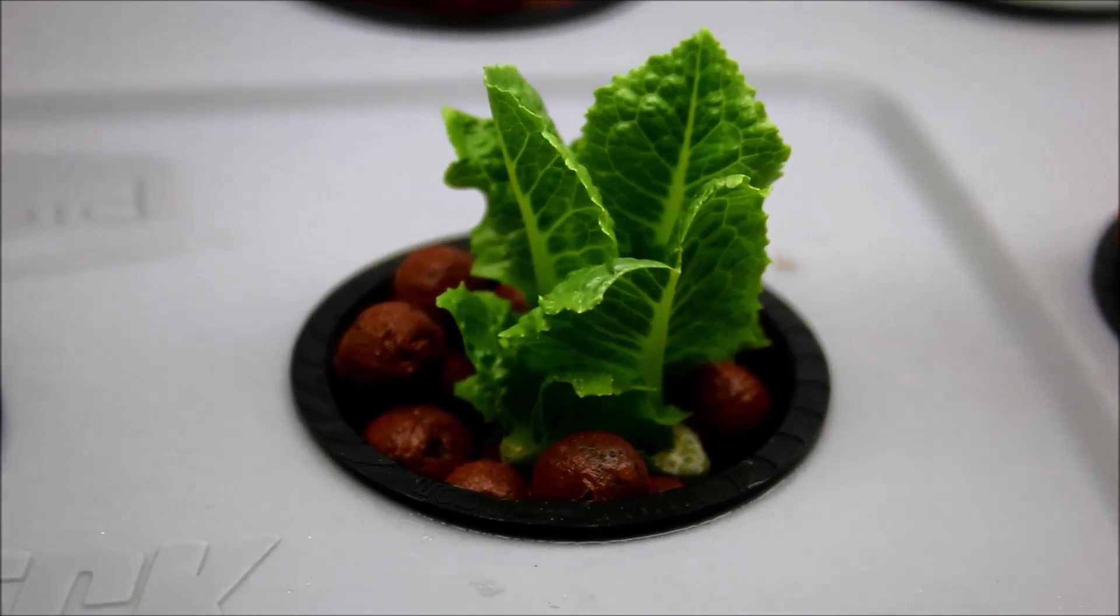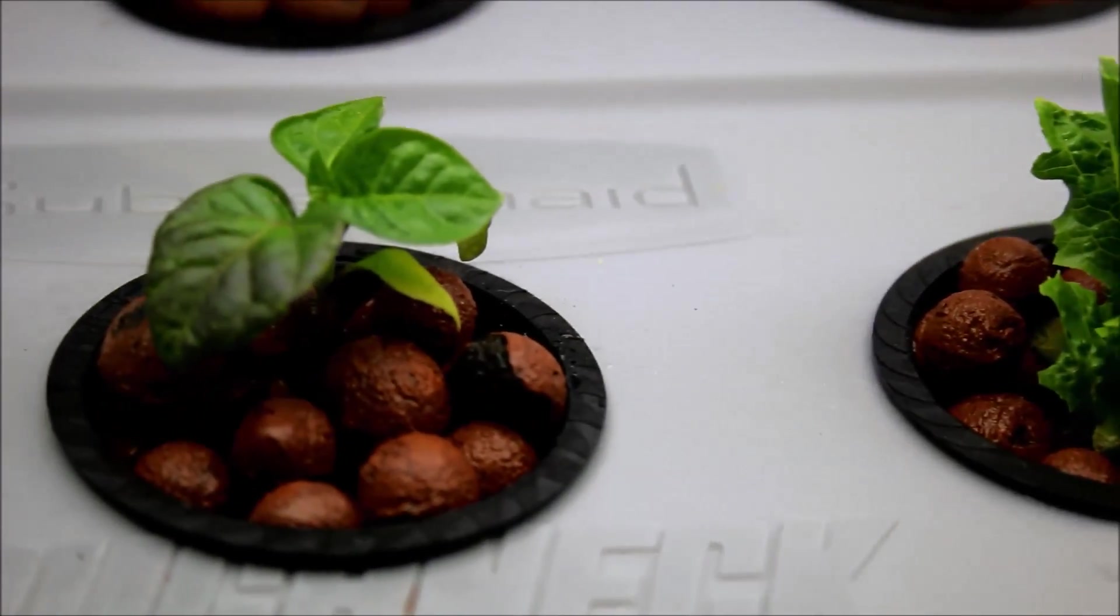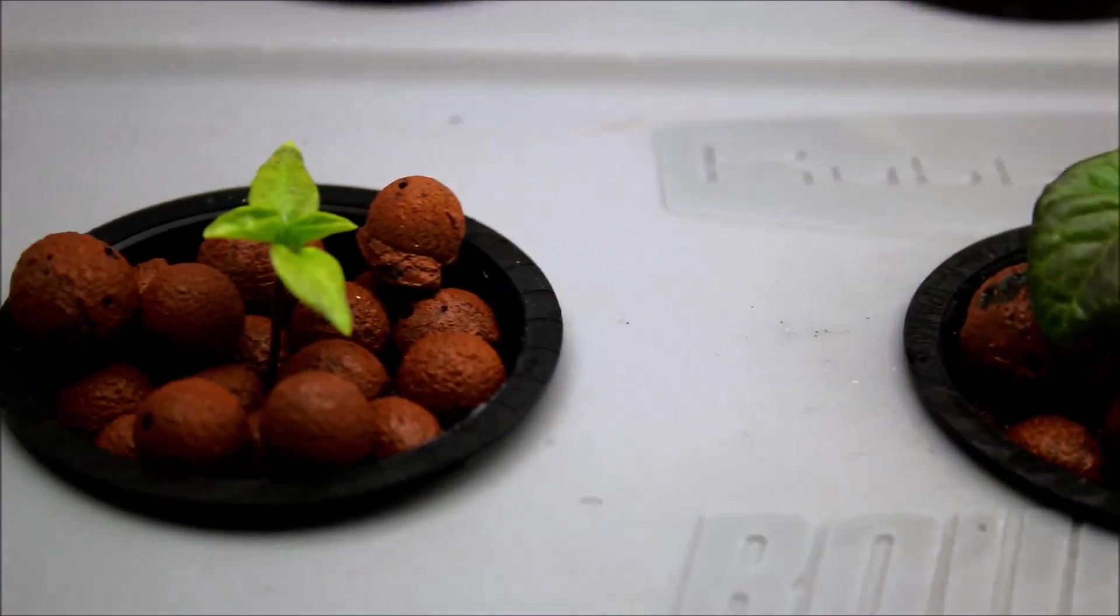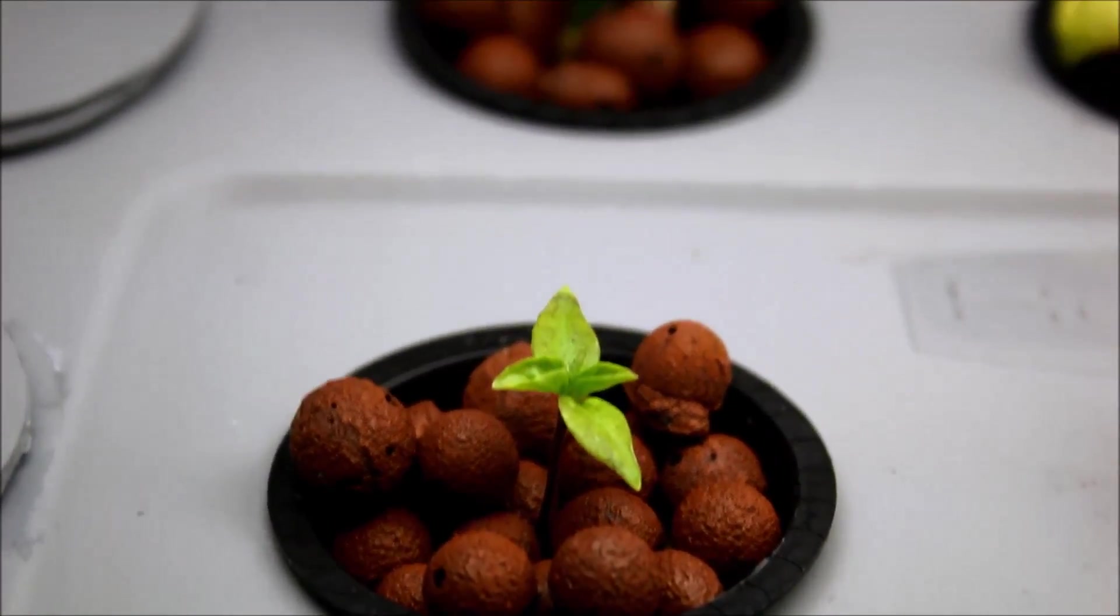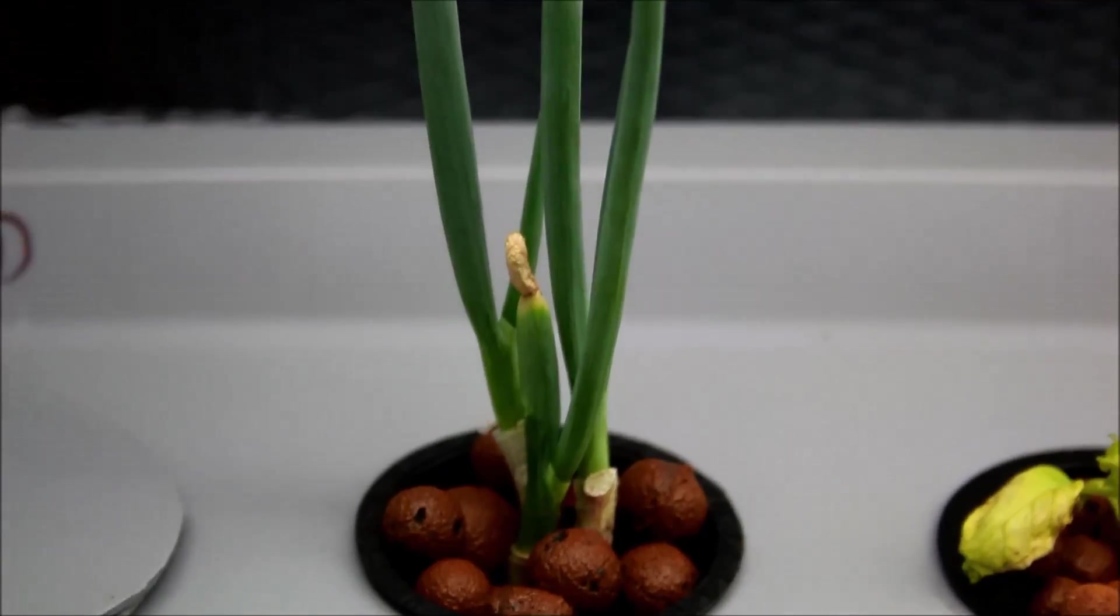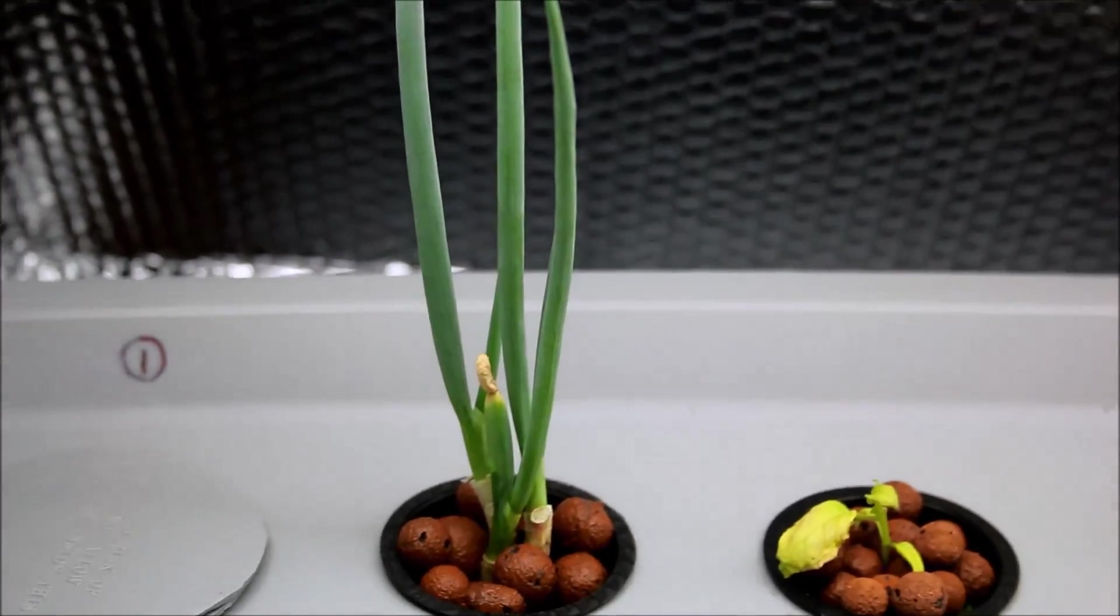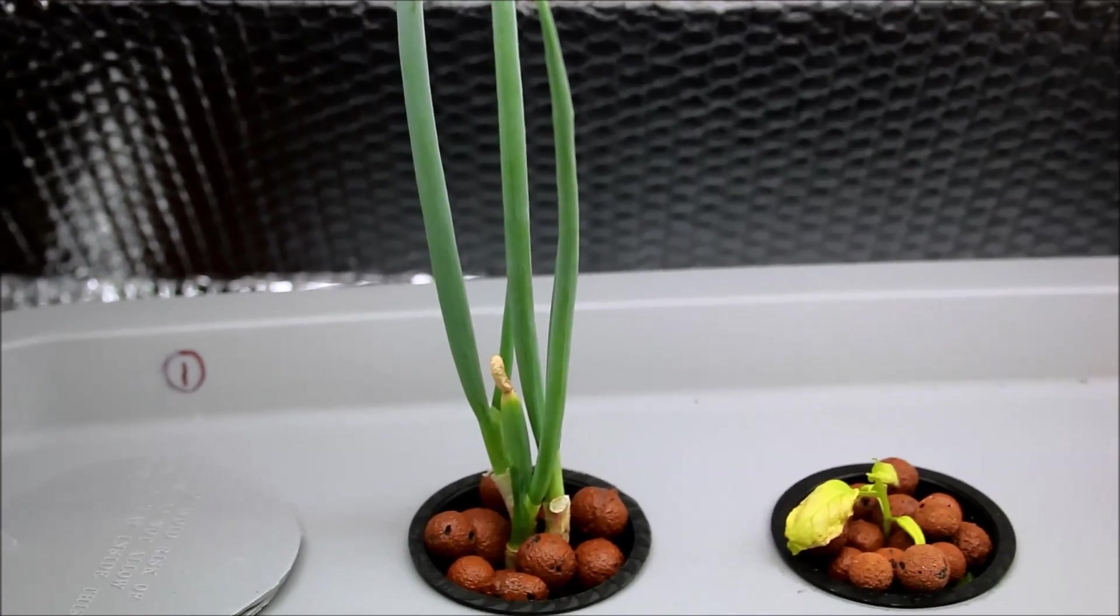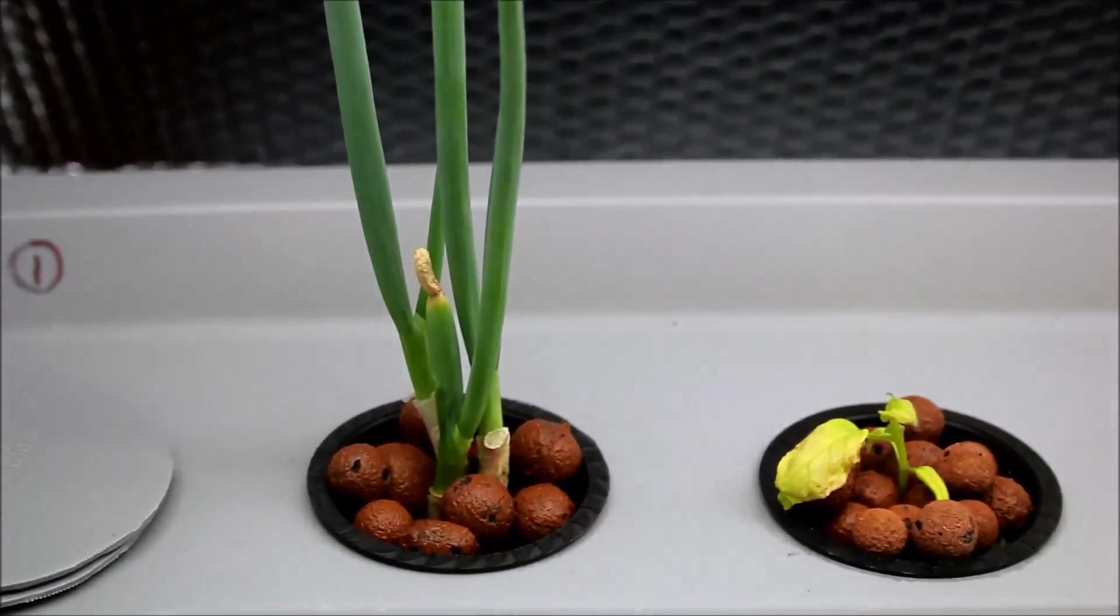Here's the romaine lettuce that I've started from the core of our previous one. So this is all regrown. Looking quite happy actually. There's a couple of pepper plants. I can't remember which ones they are just off the top of my head. And I've started another green onion from a regrow. This is only about an inch long when I cut this one.